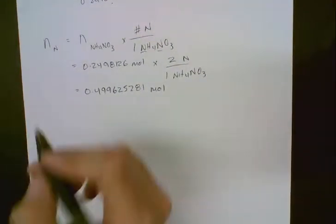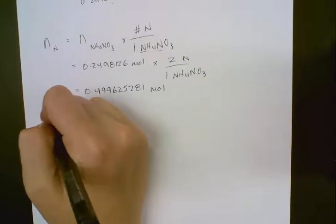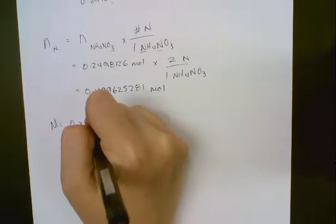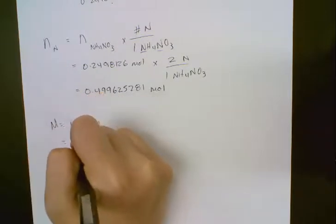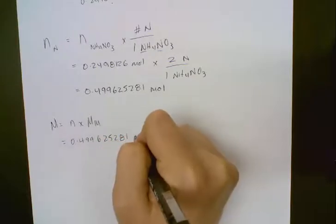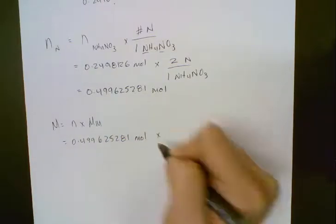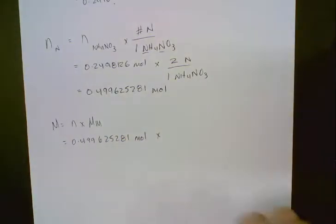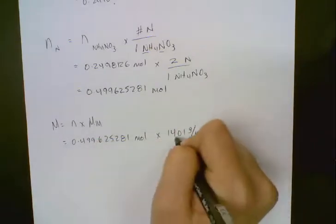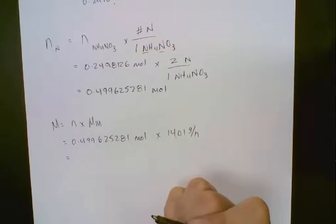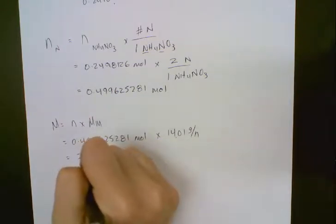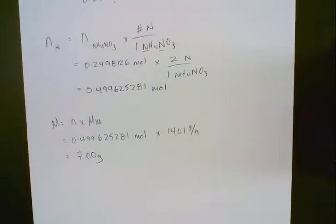Now that we know moles of nitrogen, we can figure out our mass of nitrogen because mass is moles times molar mass. We keep all those decimal places, then multiply by the molar mass of just nitrogen from the periodic table — 14.01 g/mol. And we're going to get 7 grams. So that's the final answer for question 12.